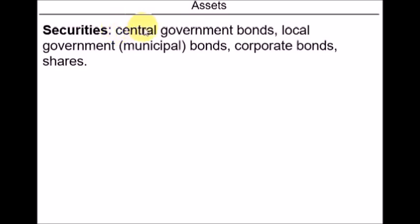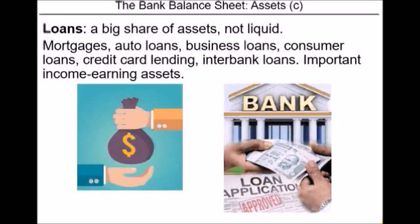The next type of assets are marketable securities. These include different types of government bonds such as treasury bills in the US, local government bonds or municipal bonds as they are called in the US, and corporate bonds. In some but not all countries, commercial banks are also allowed to hold equity shares on their balance sheets.